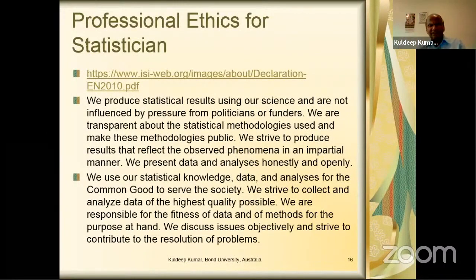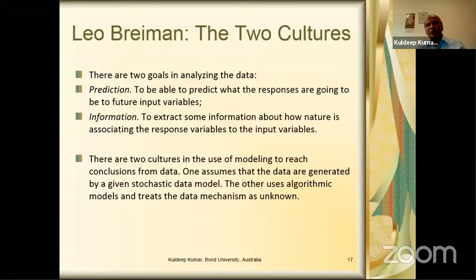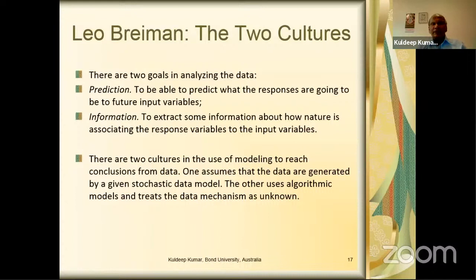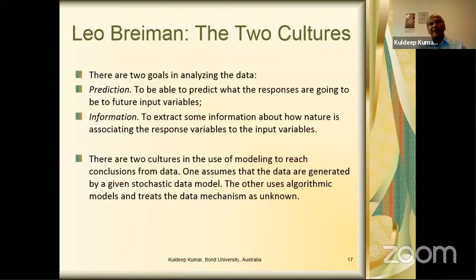The Royal Statistical Society also has ethical considerations and certain values. Leo Breiman described two cultures in statistics. If you are interested in prediction — being able to predict what the response will be in the future — that is different from information: how variables are influencing the outcome. One is prediction, such as how many COVID cases there will be or when they will flatten out. The other is information: what is causing the COVID. These are two cultures in using modeling to reach conclusions from data.